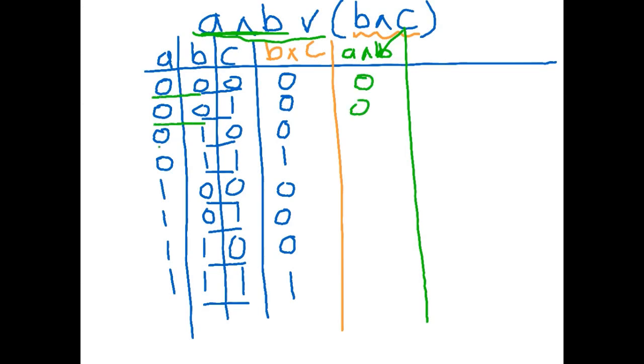So false, false, false, false. Remember they're both going to be true for it to be true. False, false, and the last two are both true. So I've done this bit. I've done this bit.